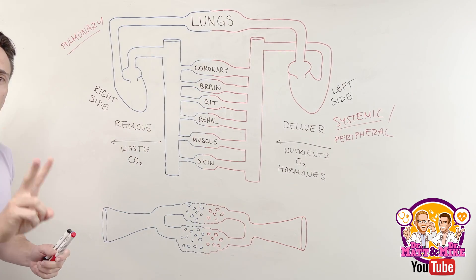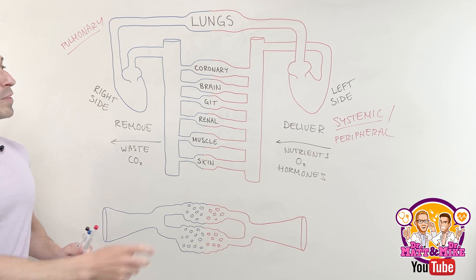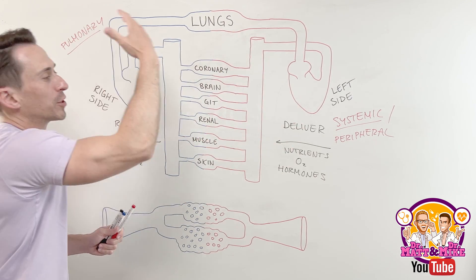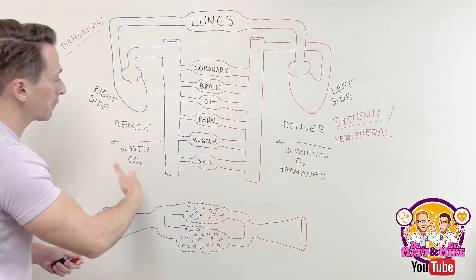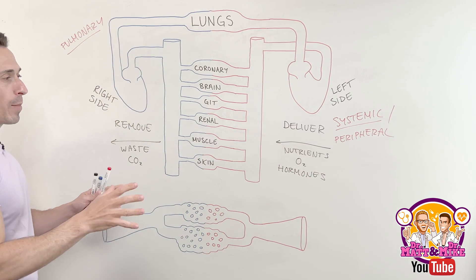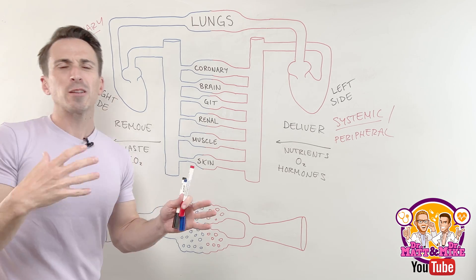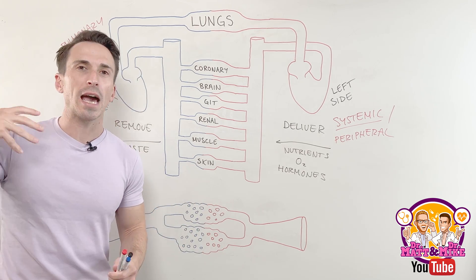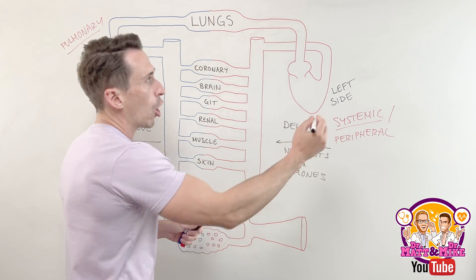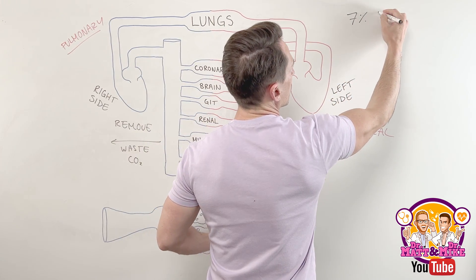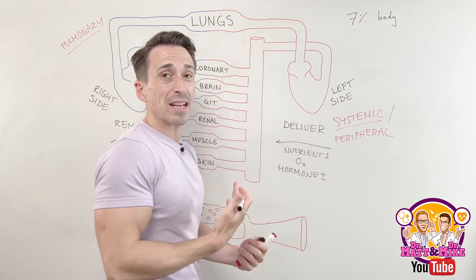So we've got these two different circulations. This blood that we're pushing through to deliver these nutrients, oxygen, gases, and hormones — and to take various things away — we have around about five liters of this blood in our body. It depends on your body size and your sex, for example, but generally speaking, seven percent of your body weight is the volume of blood in your body. So for me, that's around about five liters.